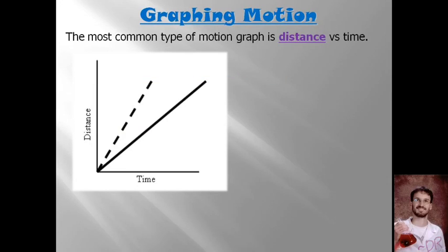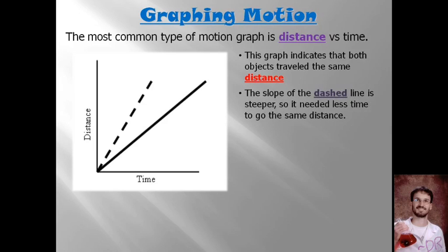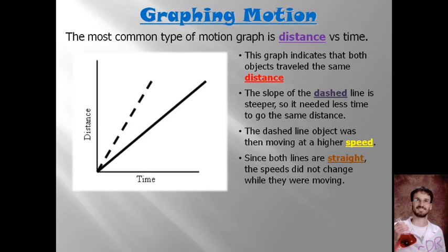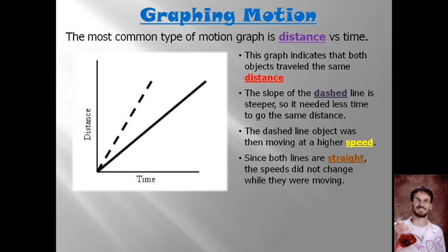If we draw a line across, they both meet exactly the same height on the y-axis, which means they both traveled the same distance. The change between the two, what makes them different from each other, is that one did it in less time. The dashed line is steeper, which means it got to that distance in a smaller amount of time. So that means this one is moving faster. Since both lines are straight, they both had constant speeds, and the dashed line achieved the same distance in a smaller amount of time, so it has a steeper slope and a faster speed.